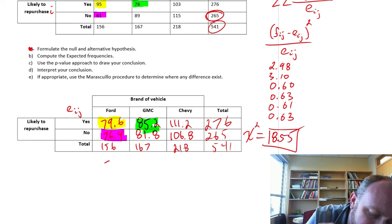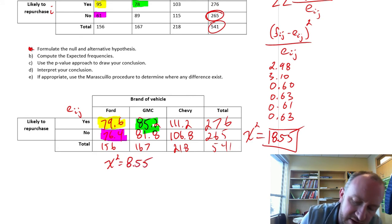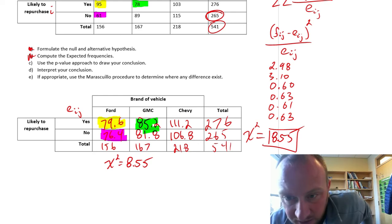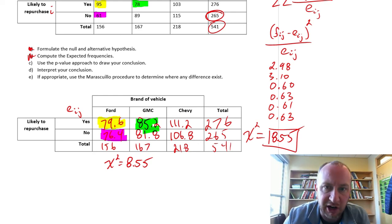8.55, so there's our final test statistic. So that's good, we've done part B. Now we can do part C, figure out our p-value, our critical value.